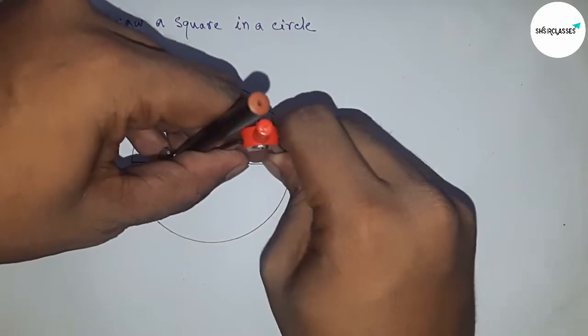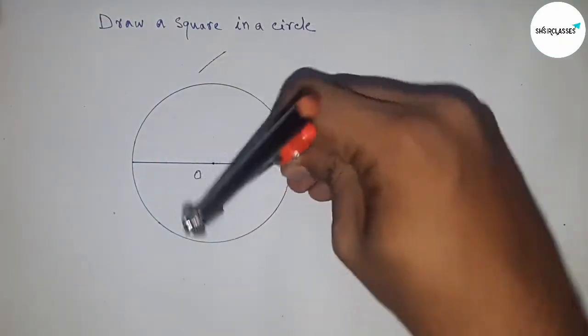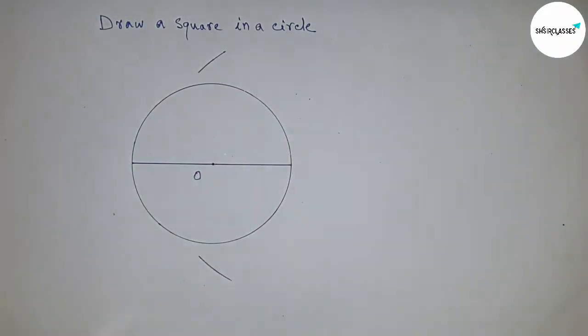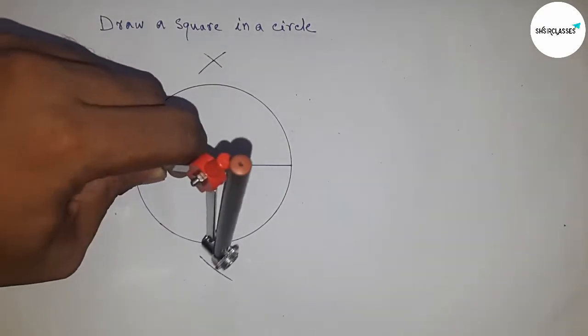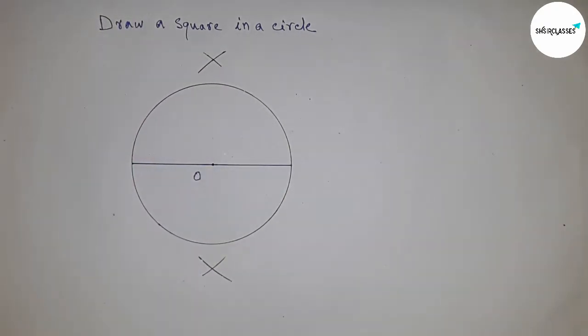Take greater than half of the diameter and draw an arc here. Draw another arc with the same length. Put the compass on the other point and cut the arcs. Next, join these points.